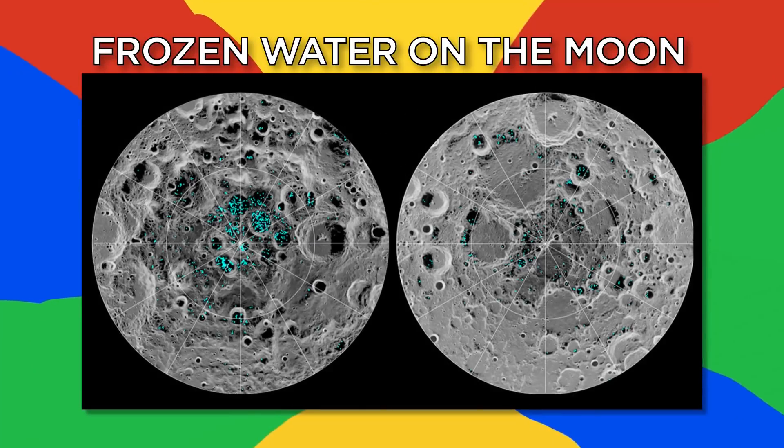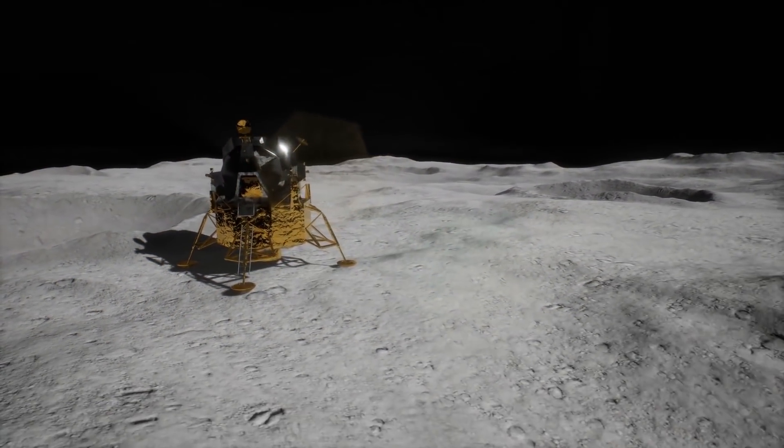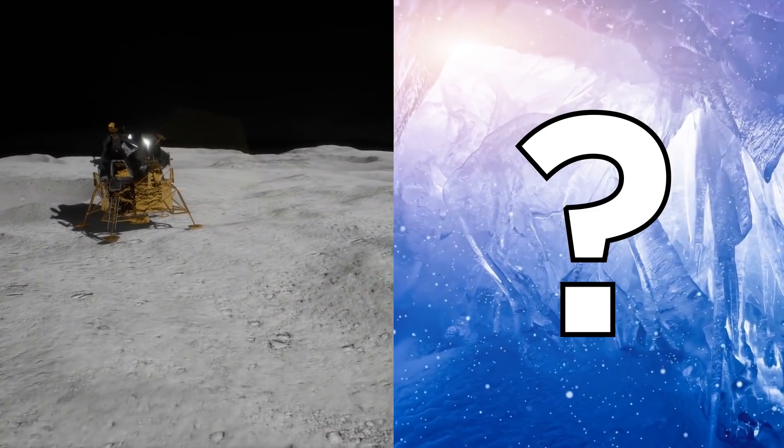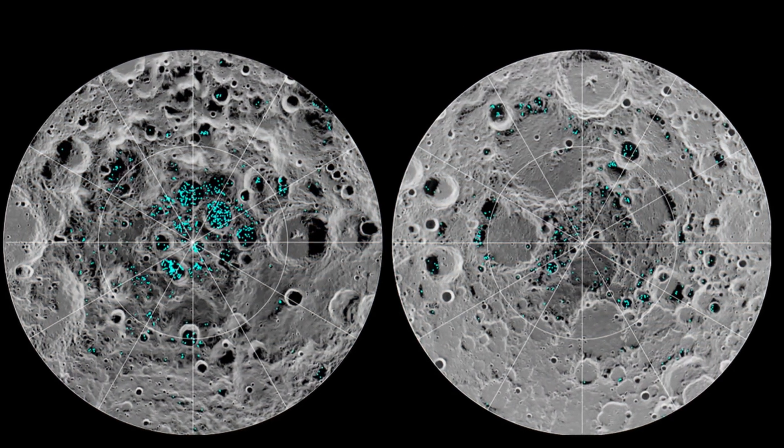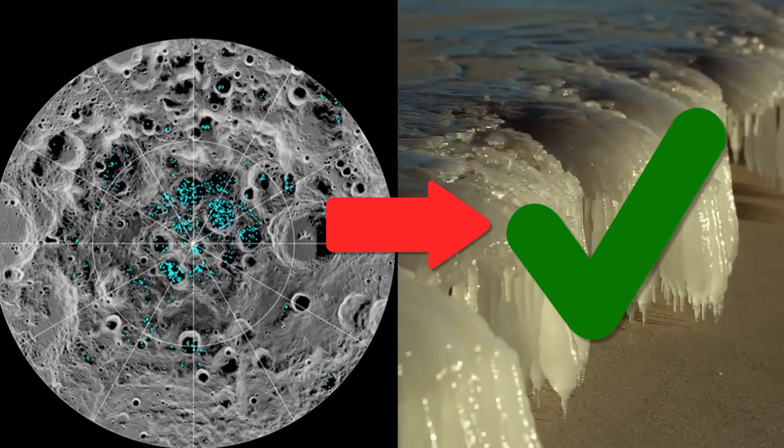Number seven, frozen water on the moon. Previous analyses of the moon gave clues as to whether it had ice or not. But this is the first time scientists had direct evidence of frozen water on the satellite.